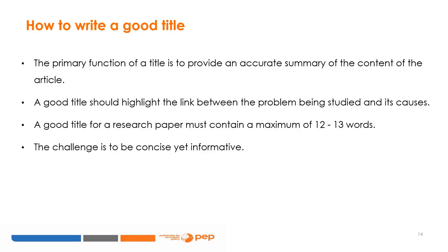How can I describe my paper in a single sentence? Here are some basic principles. First, keep in mind the primary function of a title is to provide an accurate summary of the article's content — it must tell the reader what your paper has researched and concluded. Second, a good title should contain your findings, which is primarily what readers want to know. Third, it should also give a glimpse of your methodology — it should relate a cause to an effect through some method. Obeying these three principles will make your title informative as long as it is concise.